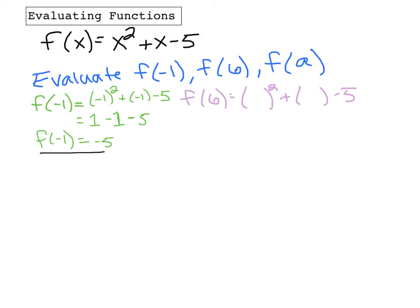Let's try the next one, f of 6. We're going to replace all the x's with a 6. So, 6 squared is 36 plus 6 minus 5. 36 plus 6 minus 5 is going to give us a 37.